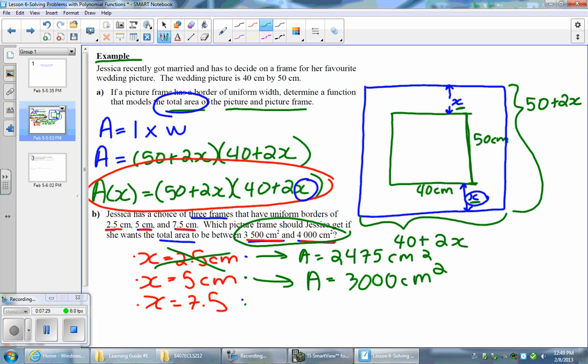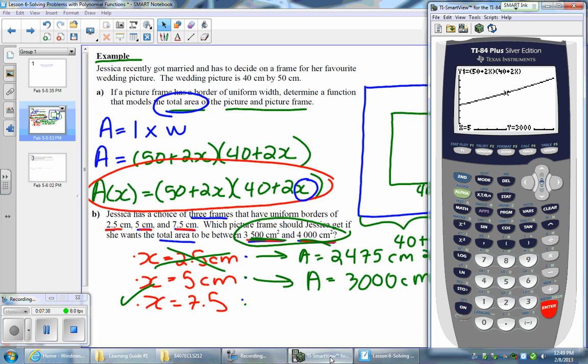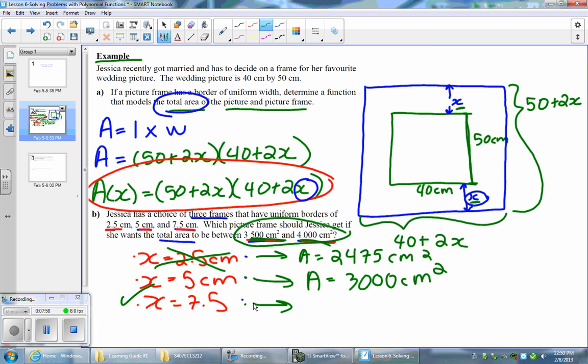By process of elimination we know this is going to work, but to confirm let's evaluate it in my calculator. Go second trace, one for value, and evaluate it when x equals 7.5. Press enter and my y value is 3,575, which reaches my requirements. 3,575 square centimeters, which confirms it.